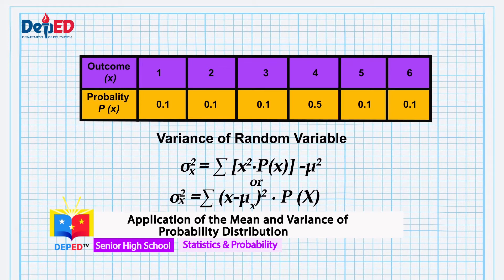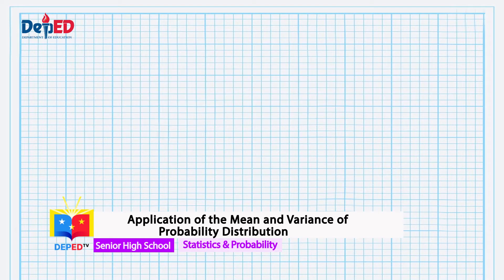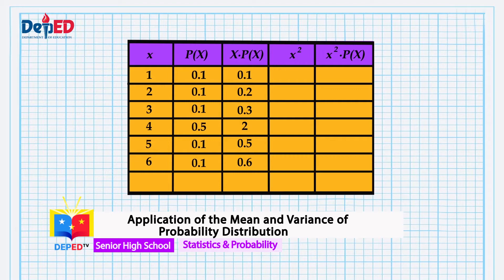How does the assumed value of the outcome vary from the average number of dots that would appear? An alternative formula for finding the variance is shown. You may use this to determine the variability of the assumed values from the mean. For now, let us use the alternate formula. First, construct a table which will contain the elements you need to solve the variance and standard deviation. We need the square of x and the product of the square and the probability. Let's also include the product of each random variable with its observed probability. Please make sure you have a copy of the table on your paper.